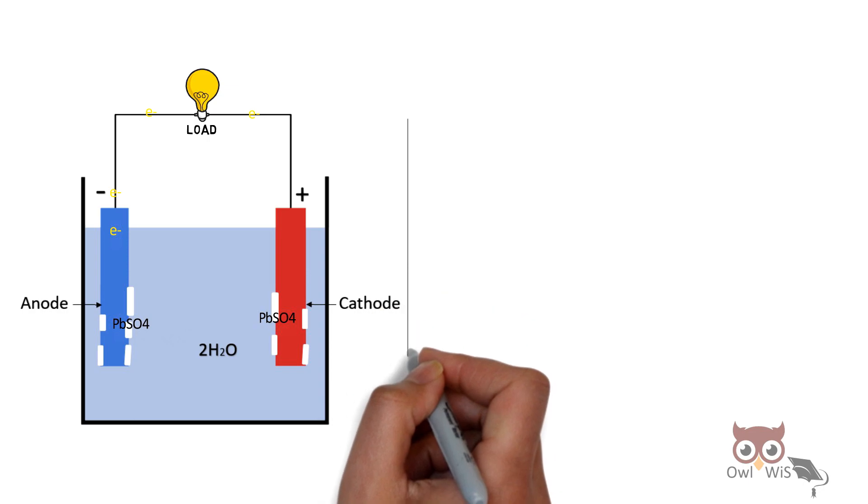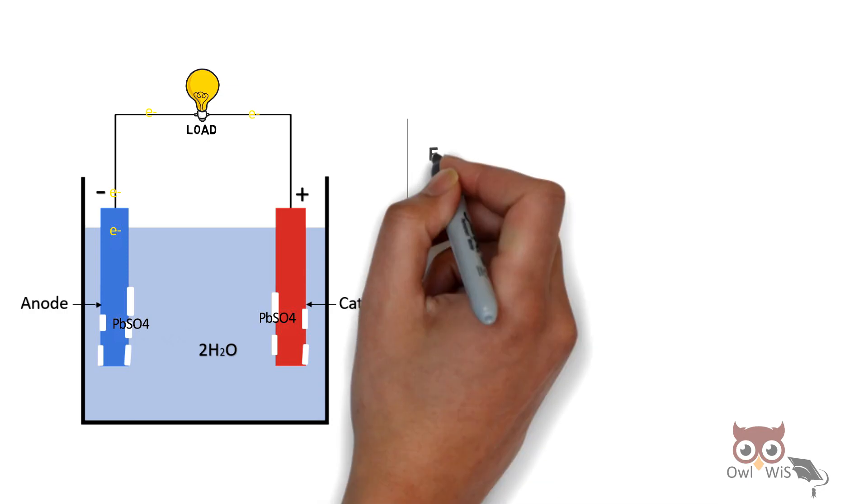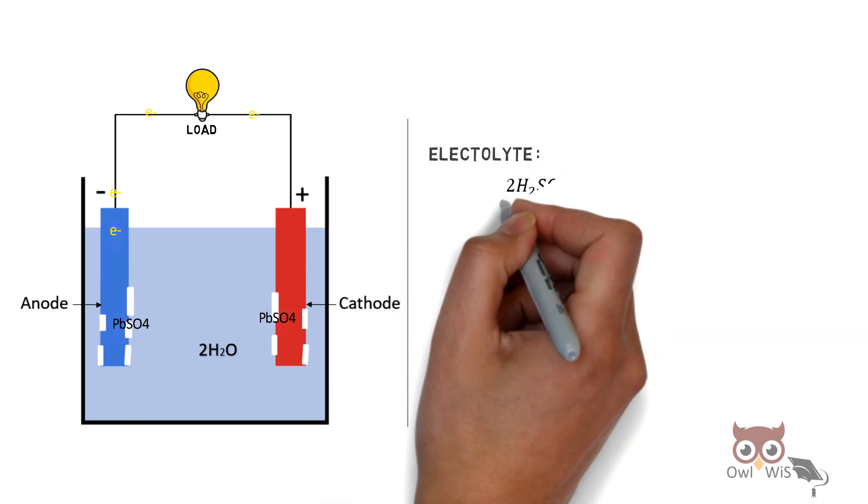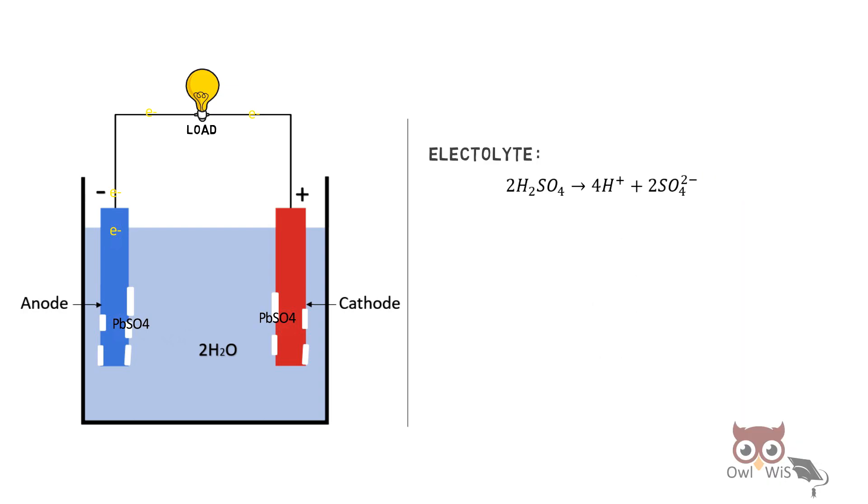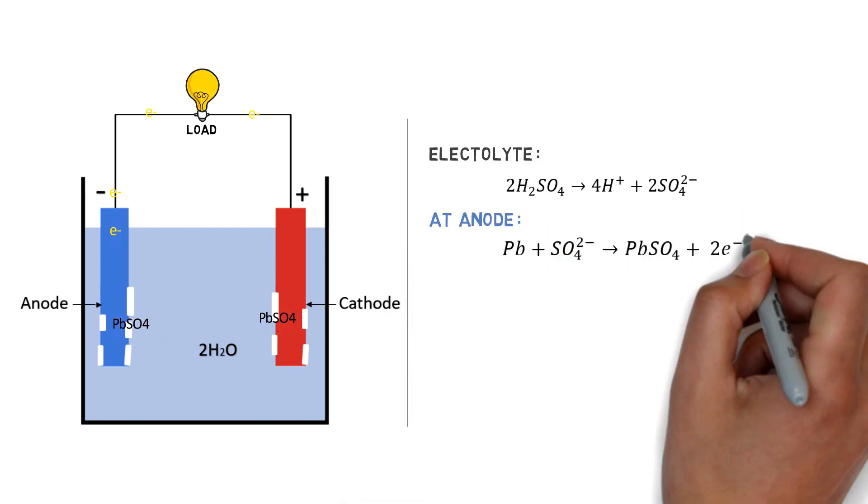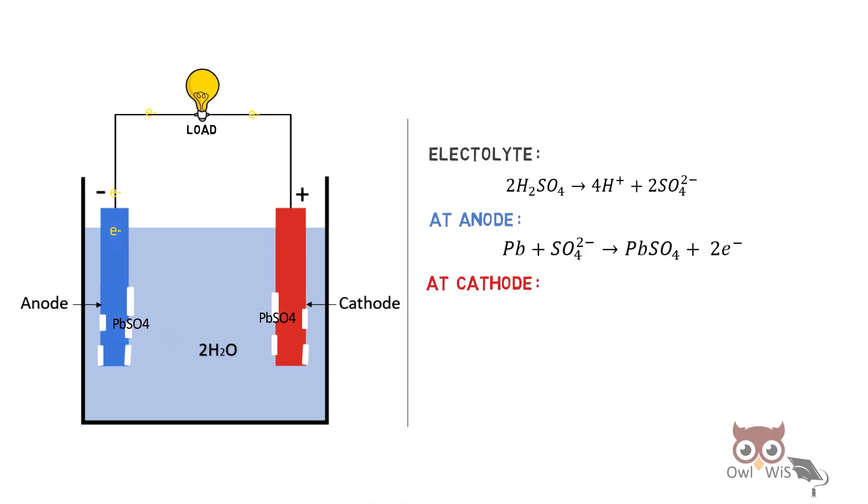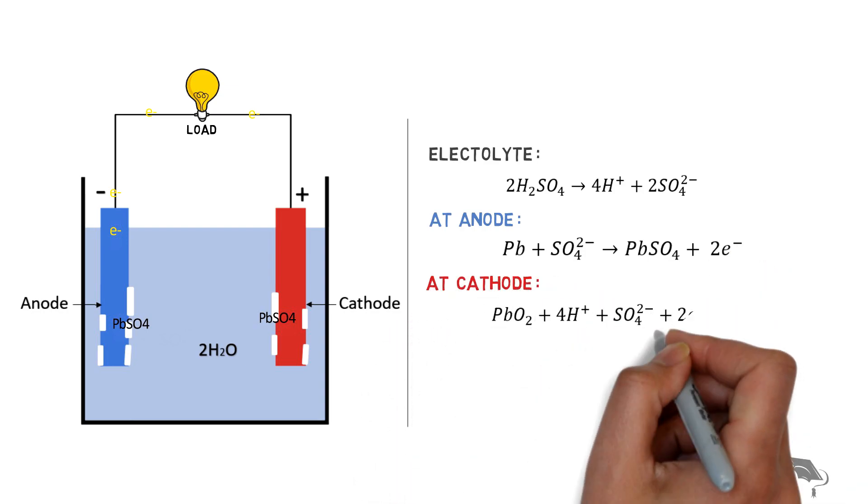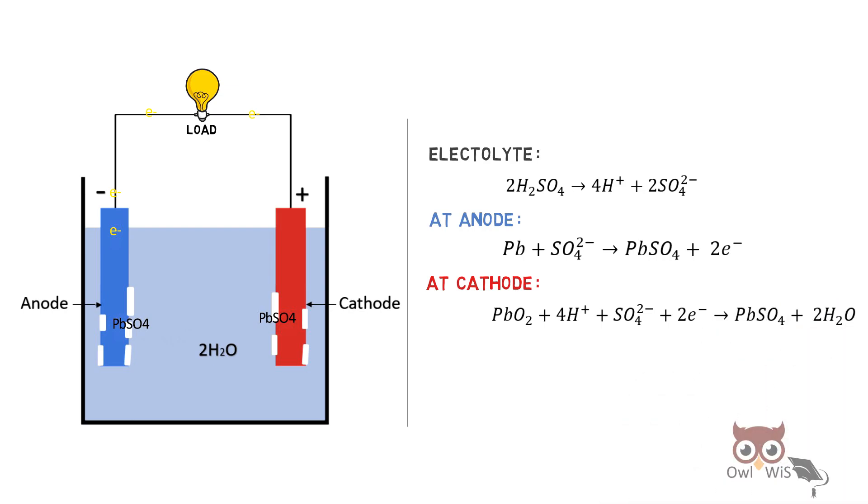Let us understand the reactions. In the electrolyte, sulfuric acid breaks into hydrogen ions and sulfate. At the anode, lead combines with sulfate to form lead sulfate, giving away electrons. At the cathode, lead peroxide reacts with hydrogen ions and sulfate to form lead sulfate and water. This is the total cell reaction.